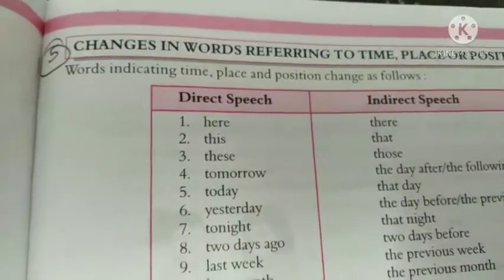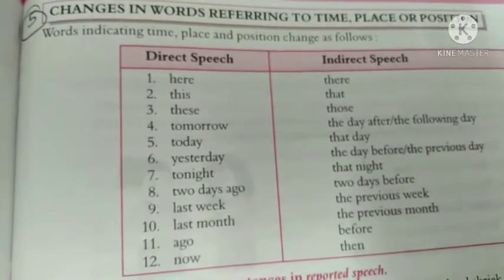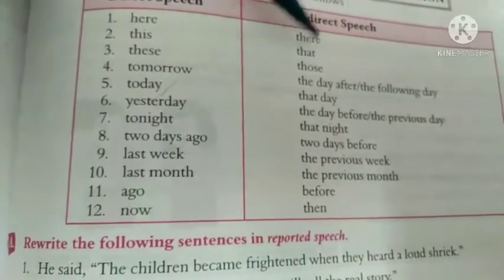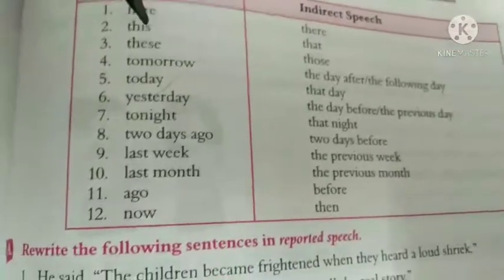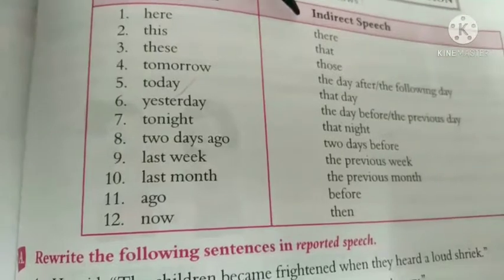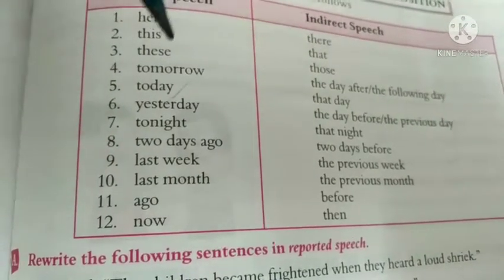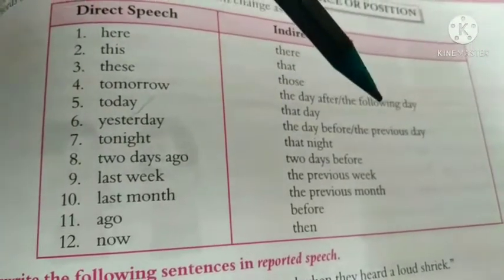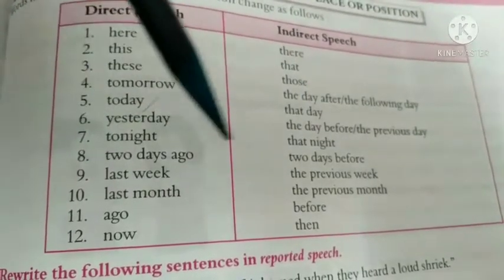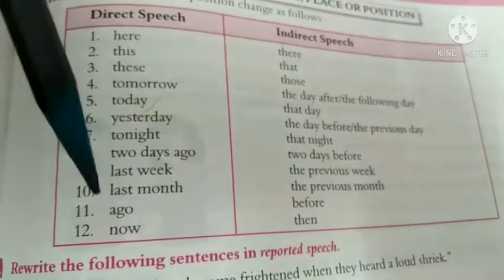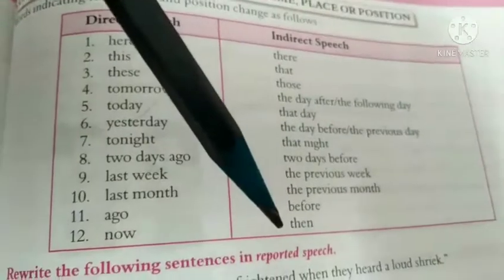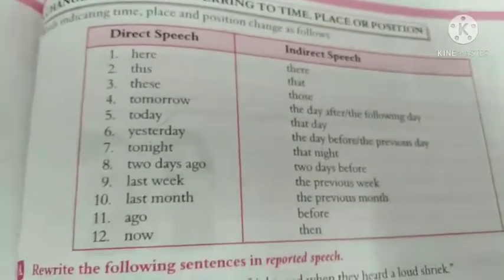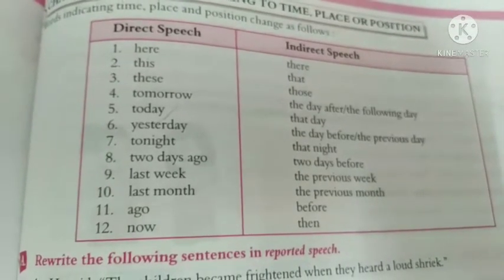Changes in words referring to time, place, or position: 'here' becomes 'there'; 'this' becomes 'that'; 'these' becomes 'those'; 'tomorrow' becomes 'the day after' or 'the following day'; 'today' becomes 'that day'; 'yesterday' becomes 'the day before' or 'the previous day'; 'tonight' becomes 'that night'; 'two days ago' becomes 'two days before'; 'last week' becomes 'previous week'; 'last month' becomes 'the previous month'; 'ago' becomes 'before'; 'now' becomes 'then.' Please remember all these tables so you will be able to change the sentences.